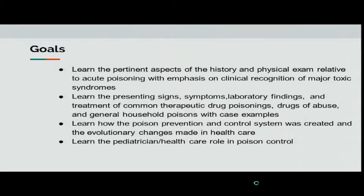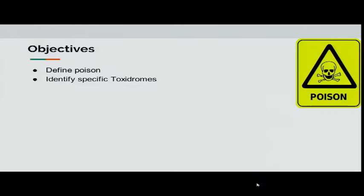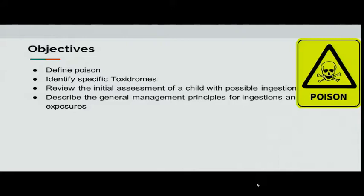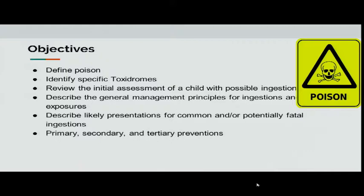The objectives are to define poison, identify specific toxidromes, review the initial assessment of a child with possible ingestion, describe the general management principles for ingestions and exposures, describe the likely presentation common for a fatal ingestion, as well as the primary, secondary, and tertiary preventions available, review the history of the poison control center, and then discuss what we can do as specialists to help.